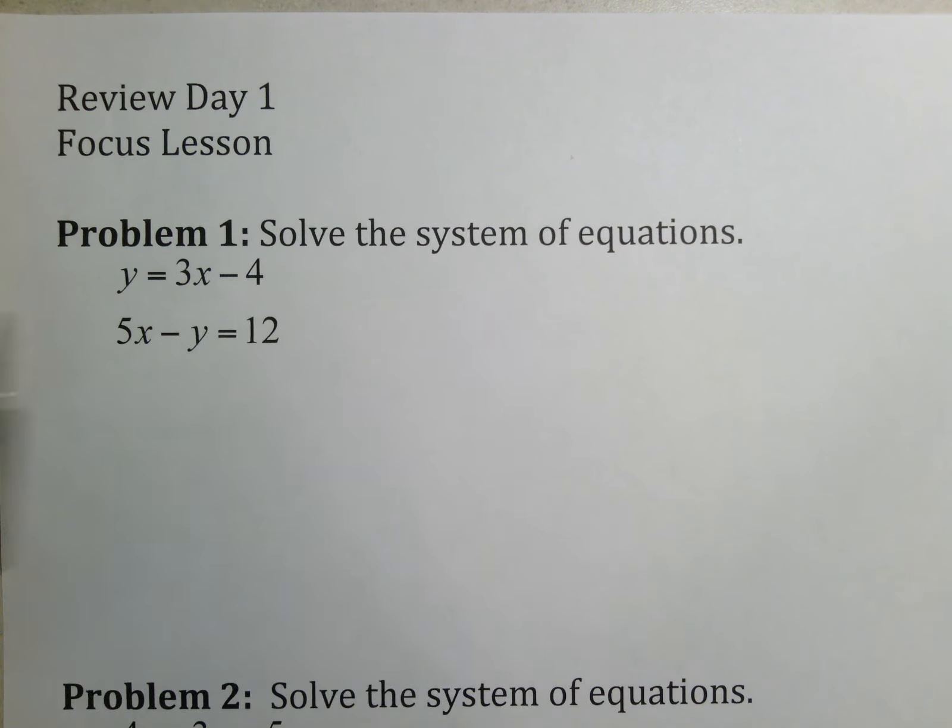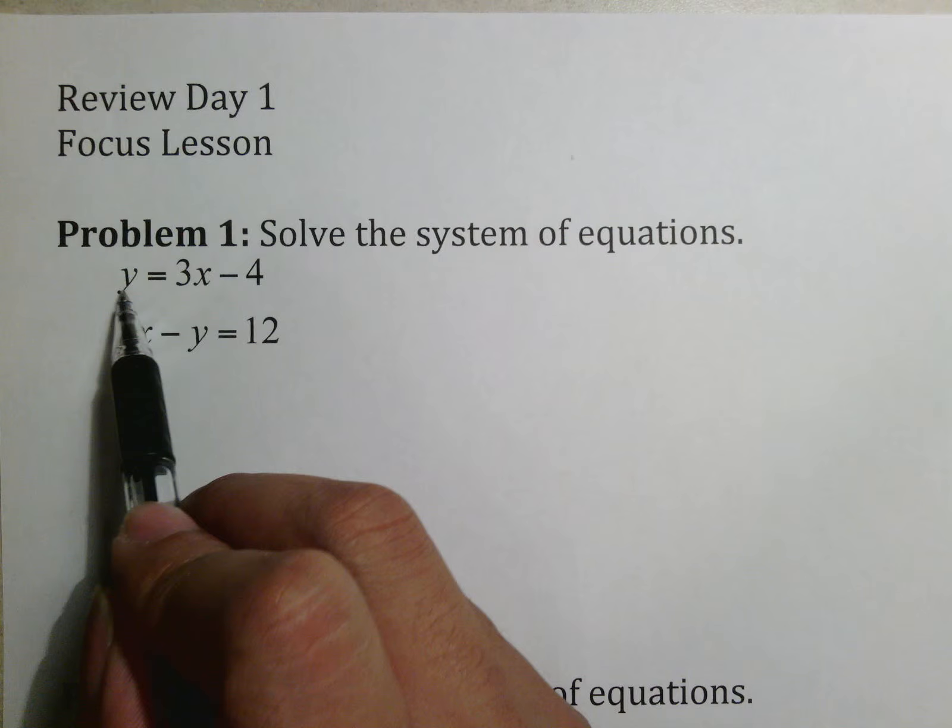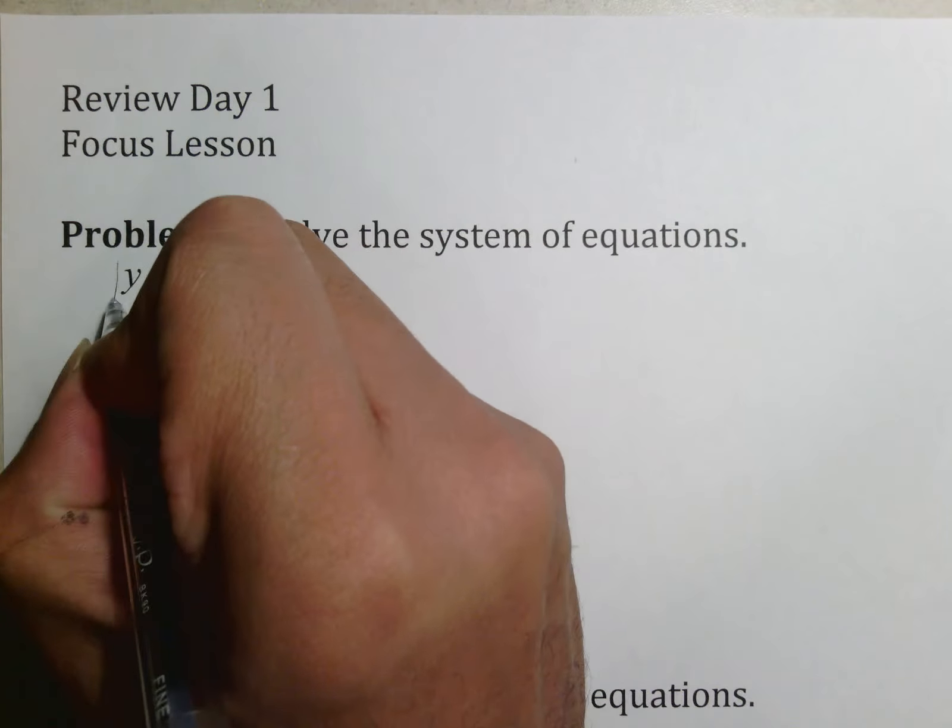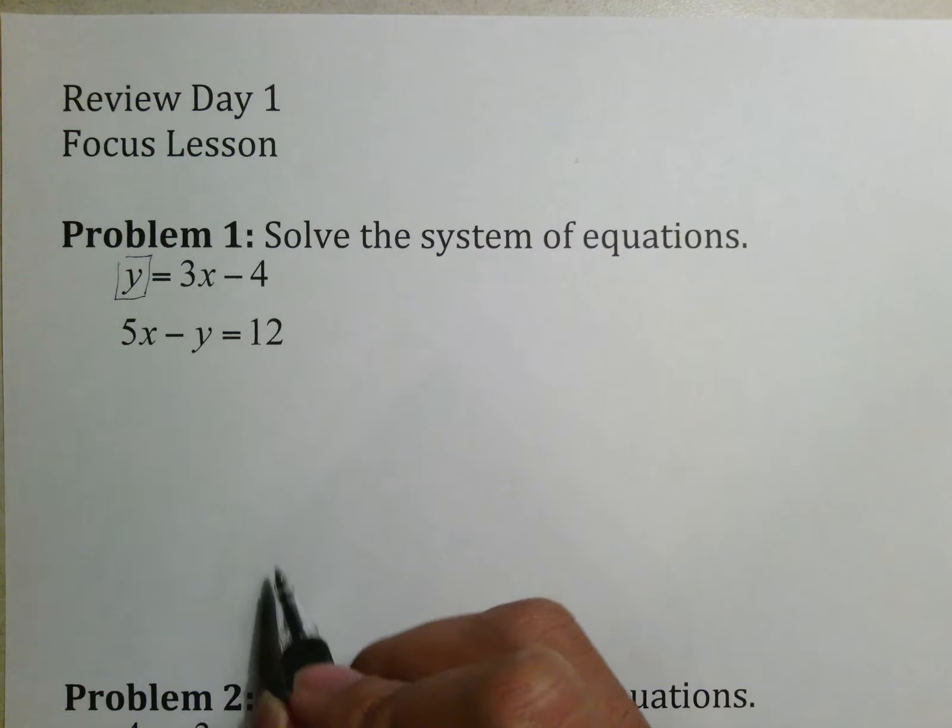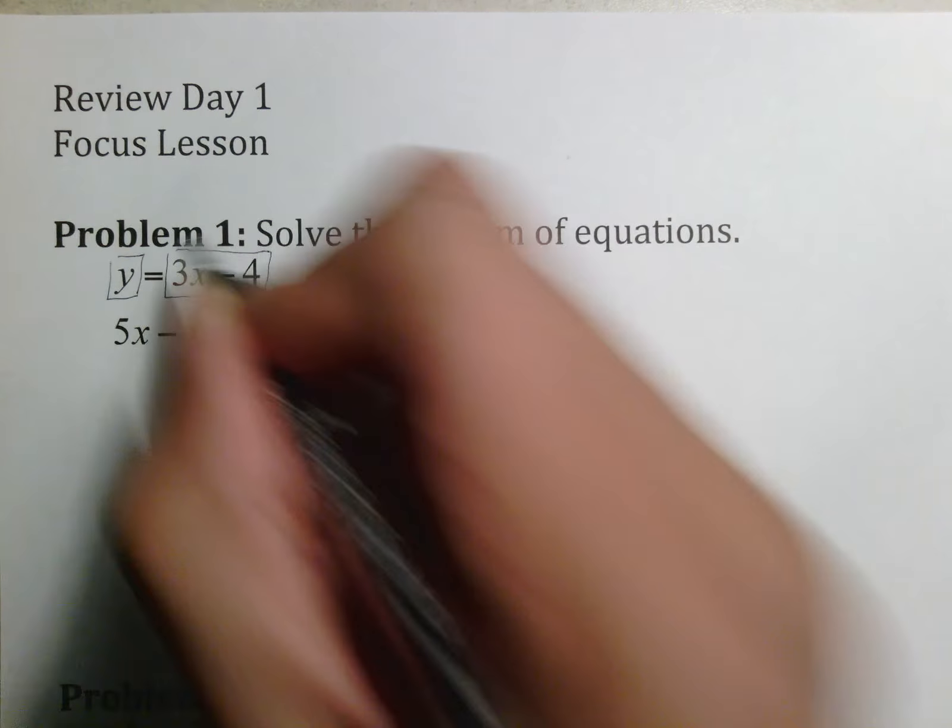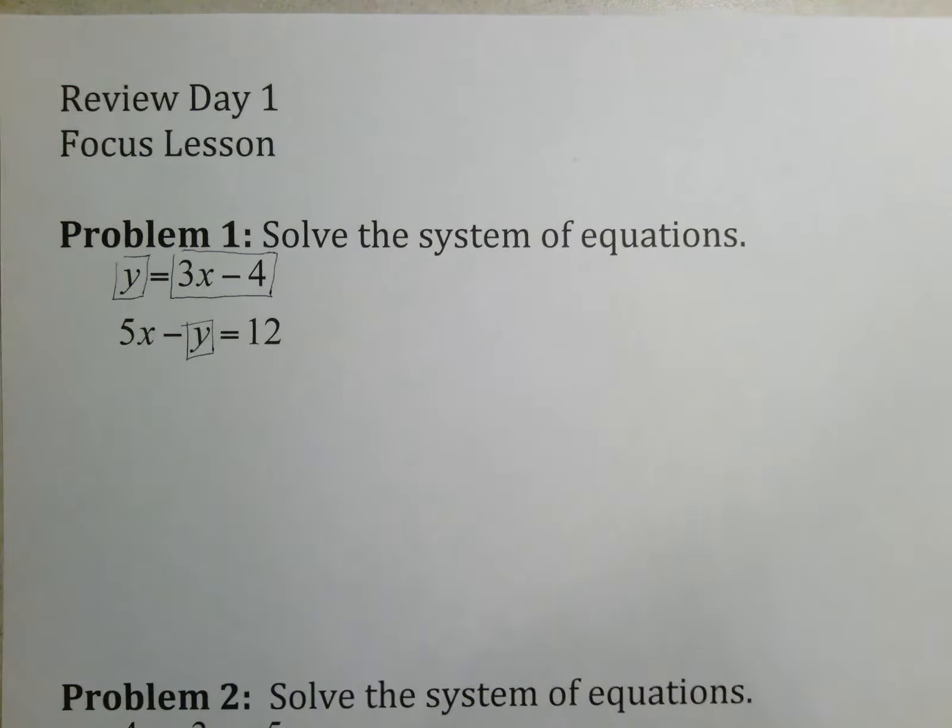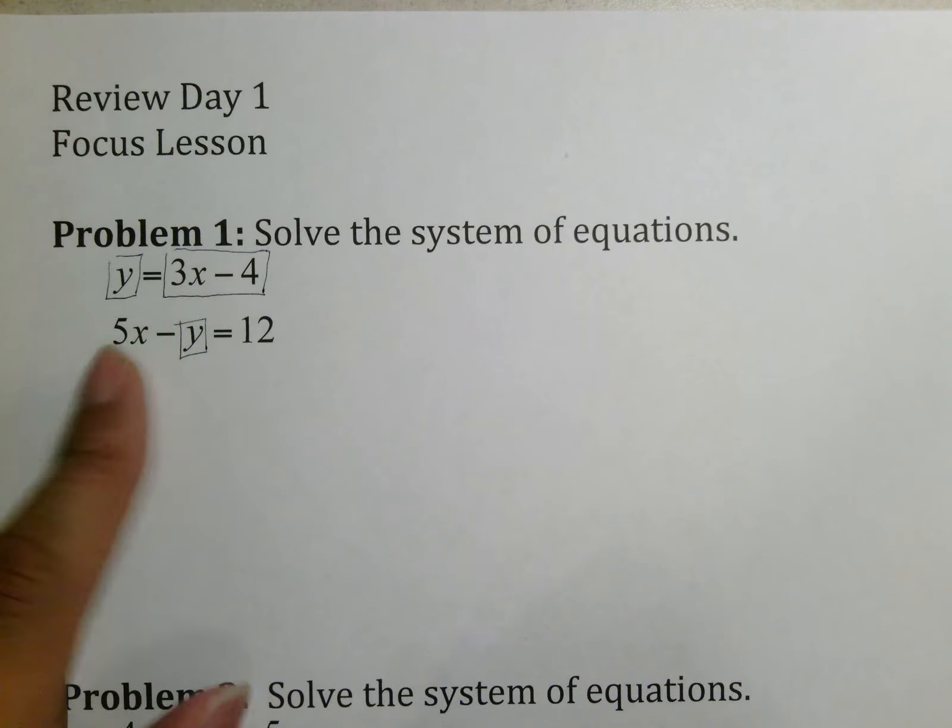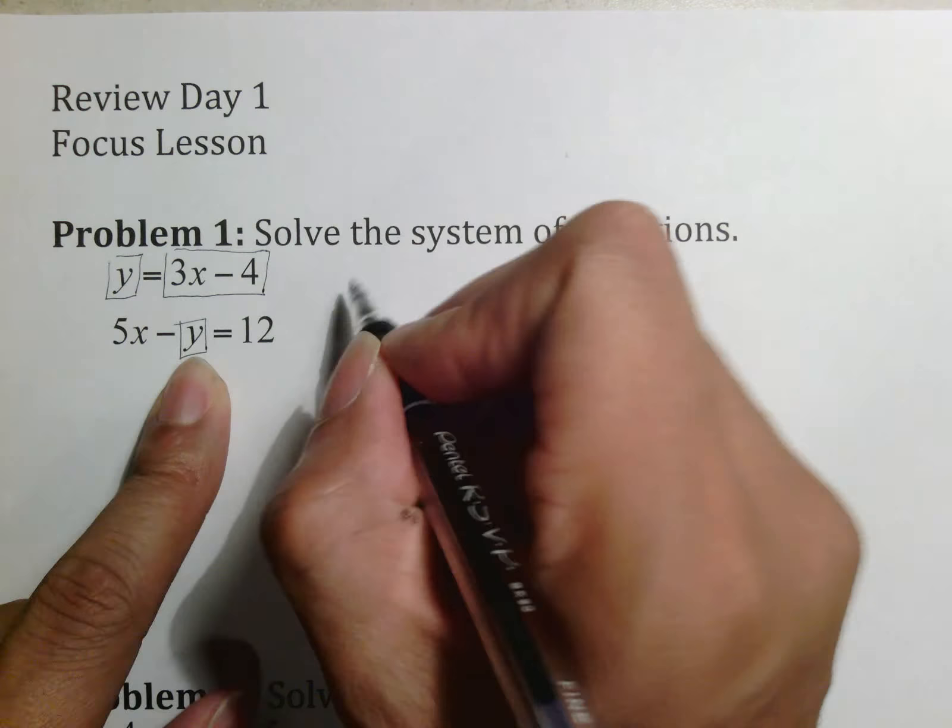If I was working this question out, the first thing I notice is that I see a y all by itself. I would use the box and switch method to say this is what I'm going to substitute, this is what I'm going to put in this place, and it's going to go right down here.